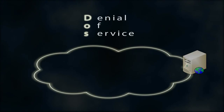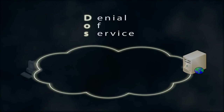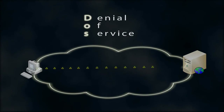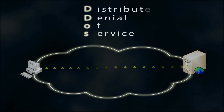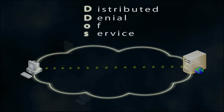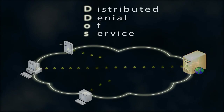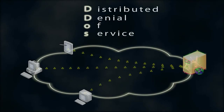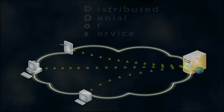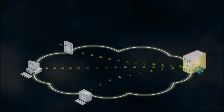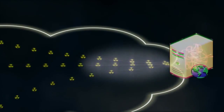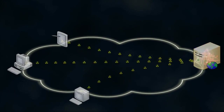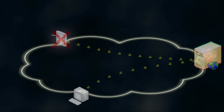In a DoS attack the malicious packets are sent from a single device. But in a DDoS attack the target is hit from several devices simultaneously. Launching the attack from multiple devices offers several advantages — more devices means more available bandwidth to flood the target. It's also harder for the victim to find and block all involved source IP addresses.